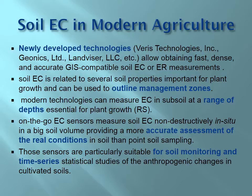An important difference of modern geophysical technologies is that they measure the subsoil at different depths, and we can choose the depths most important for plant root growth depending on the crop. Remote sensing, on the other hand, only measures spectral reflectance from the surface — from the plant — so it doesn't provide much information about soil.